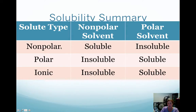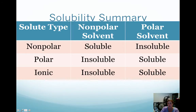To summarize solubility: if you have a nonpolar solute, you need a nonpolar solvent for it to be soluble — a polar solvent will make it insoluble. Like dissolves like. A polar solute is insoluble in a nonpolar solvent, but soluble in a polar solvent. An ionic compound is polar by nature — it has a large electronegativity difference and is a metal-nonmetal combination. Therefore, ionic compounds are insoluble in a nonpolar solvent but soluble in a polar solvent. Ionic compounds are also polar.